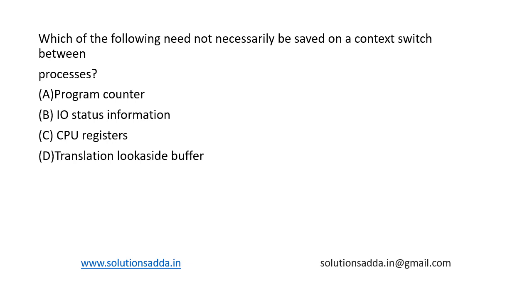This is a question from operating systems: which of the following need not necessarily be saved on a context switch between processes? The options are: program counter, I/O status, CPU registers, and Translation Look-aside Buffer (TLB).